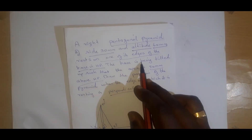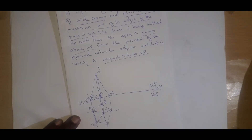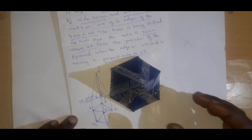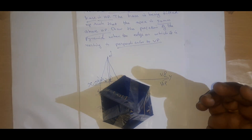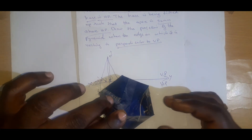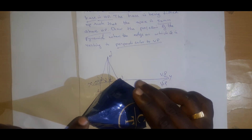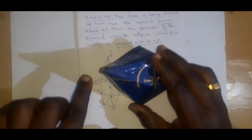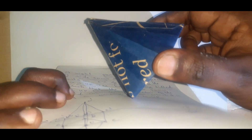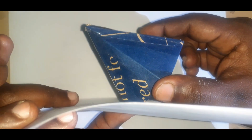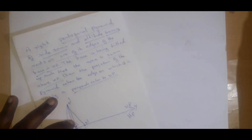It is given that the base is being tilted up such that the apex is 50 mm above the HP. Here we consider the resting edge. Normally it will be resting like this, but now it has been tilted. In this problem they have not given any angle; instead, they have given that the apex is tilted such that the distance from the ground to the apex will be 50 mm.